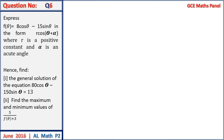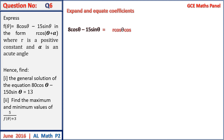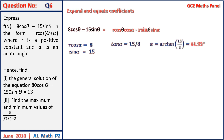Question 6: express f of theta equals 8 cos theta minus 15 sin theta in the form L cos of theta plus alpha, where L is a positive constant and alpha is an acute angle. Expanding and equating coefficients: L cos alpha equals 8 and L sin alpha equals 15. This gives tan alpha equals 15 on 8, so alpha equals arctan of 15 on 8, giving 61.93 degrees.